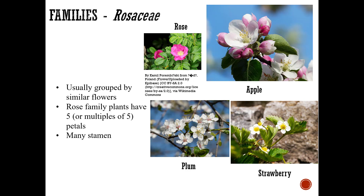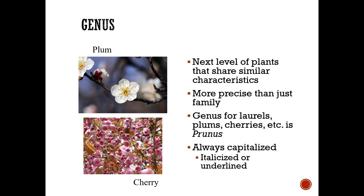Within the family, plants are grouped together usually by similar flowers. Rose family plants, for example, have five or multiples of five petals and many stamens — this includes apple, plum, and strawberry. The next level is genus, which is more precise than family. The genus for laurels, plums, cherries, and related plants is Prunus.